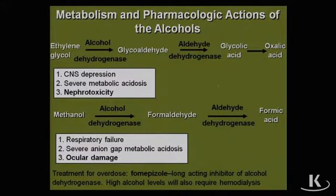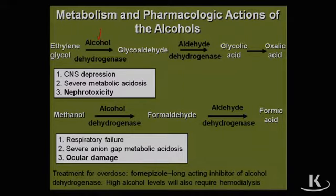If you look on this first slide or in your book, you might remember from biochemistry that alcohols are metabolized primarily by dehydrogenases. Alcohol dehydrogenase is the first enzyme, taking the actual ethylene glycol, methanol, or ethanol to an aldehyde, and then an aldehyde dehydrogenase brings the final metabolite to an acid — hence the acidosis.